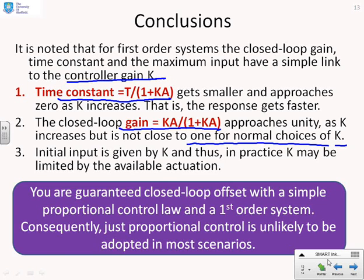The initial input u(0) is given by K, and thus in practice, K may be limited by the available actuation. The key point you will have noticed is with a simple first-order system and a proportional control law, you will always get closed-loop offset. Therefore, just proportional control is unlikely to be used in most scenarios.